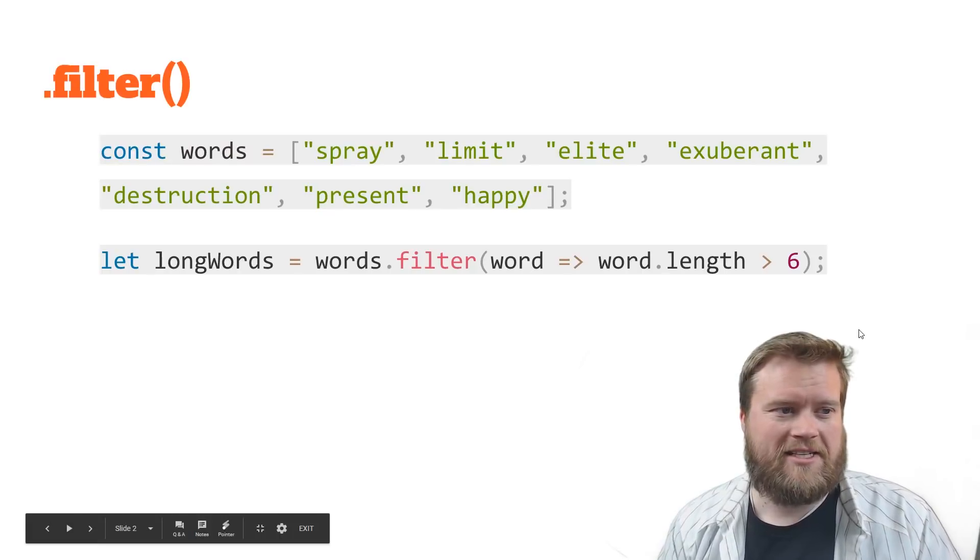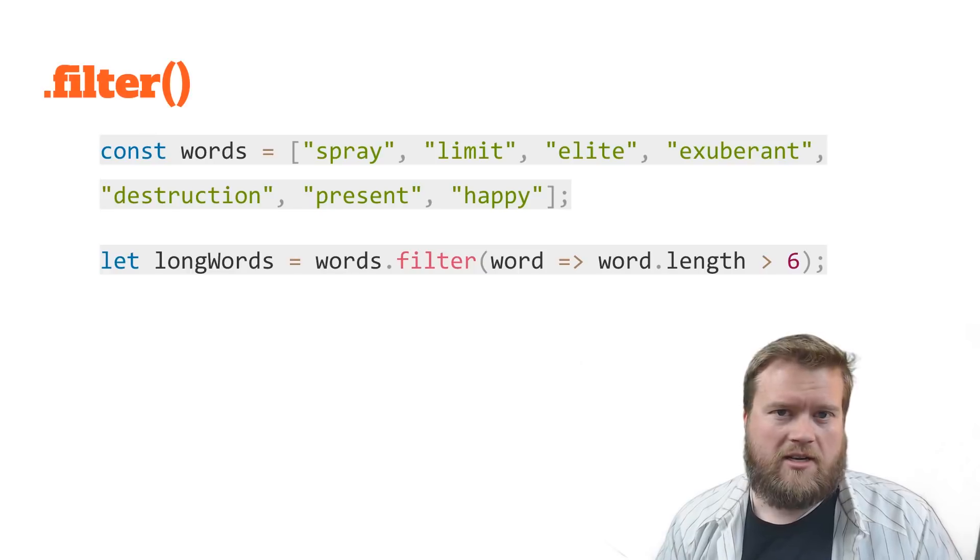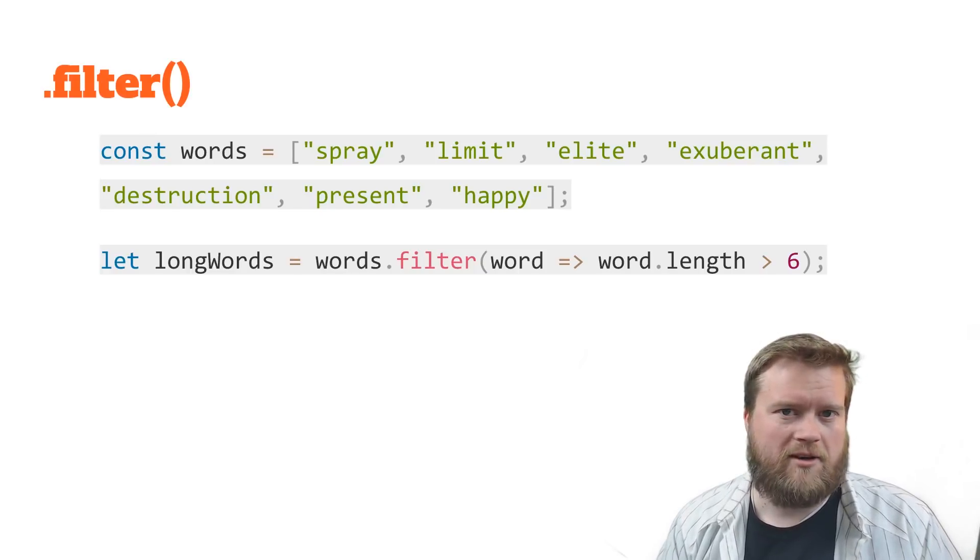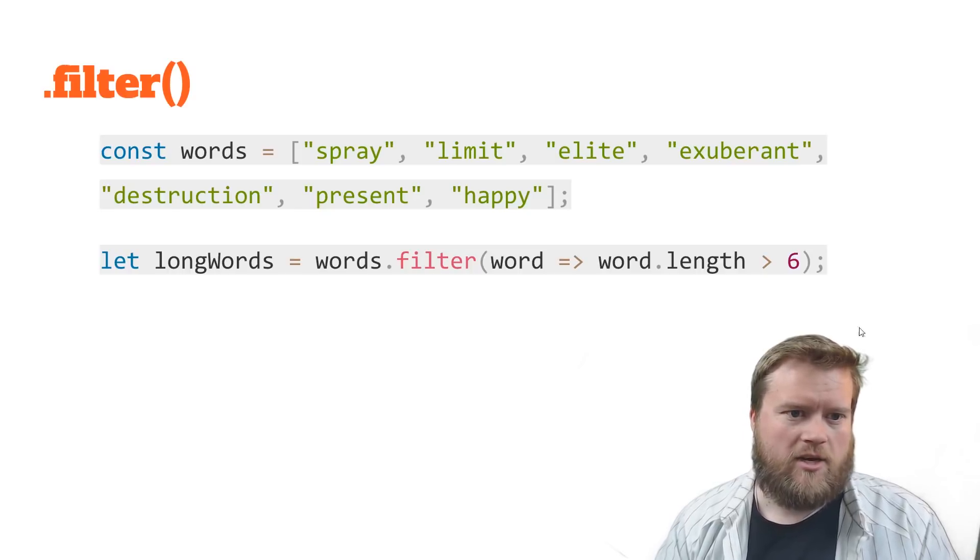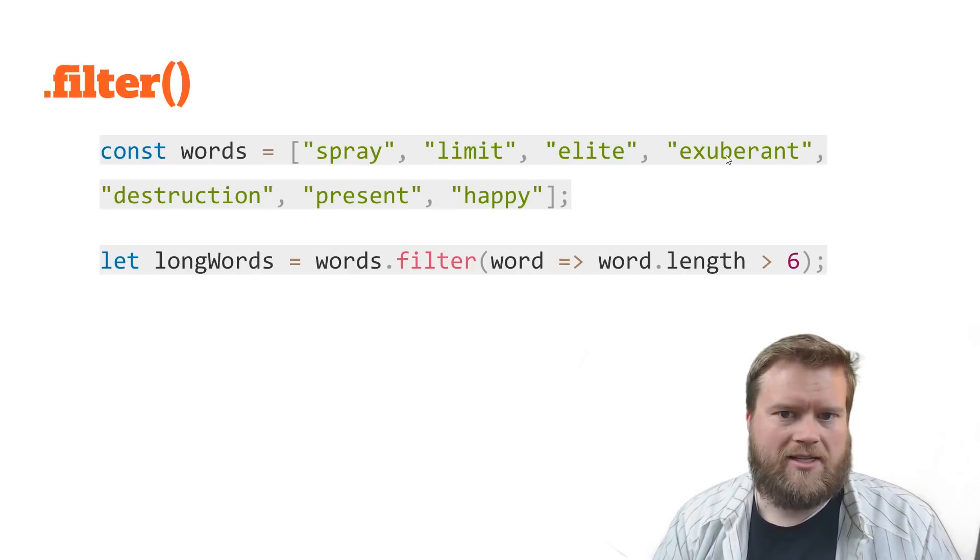Number one in my list here is filter. There's filter, map, and reduce are sort of the three most popular ones that I'm going to talk about today. So here's an example. Let's say we have const words: spray, limit, elite, exuberant, destruction, present, happy, but we want to filter it.